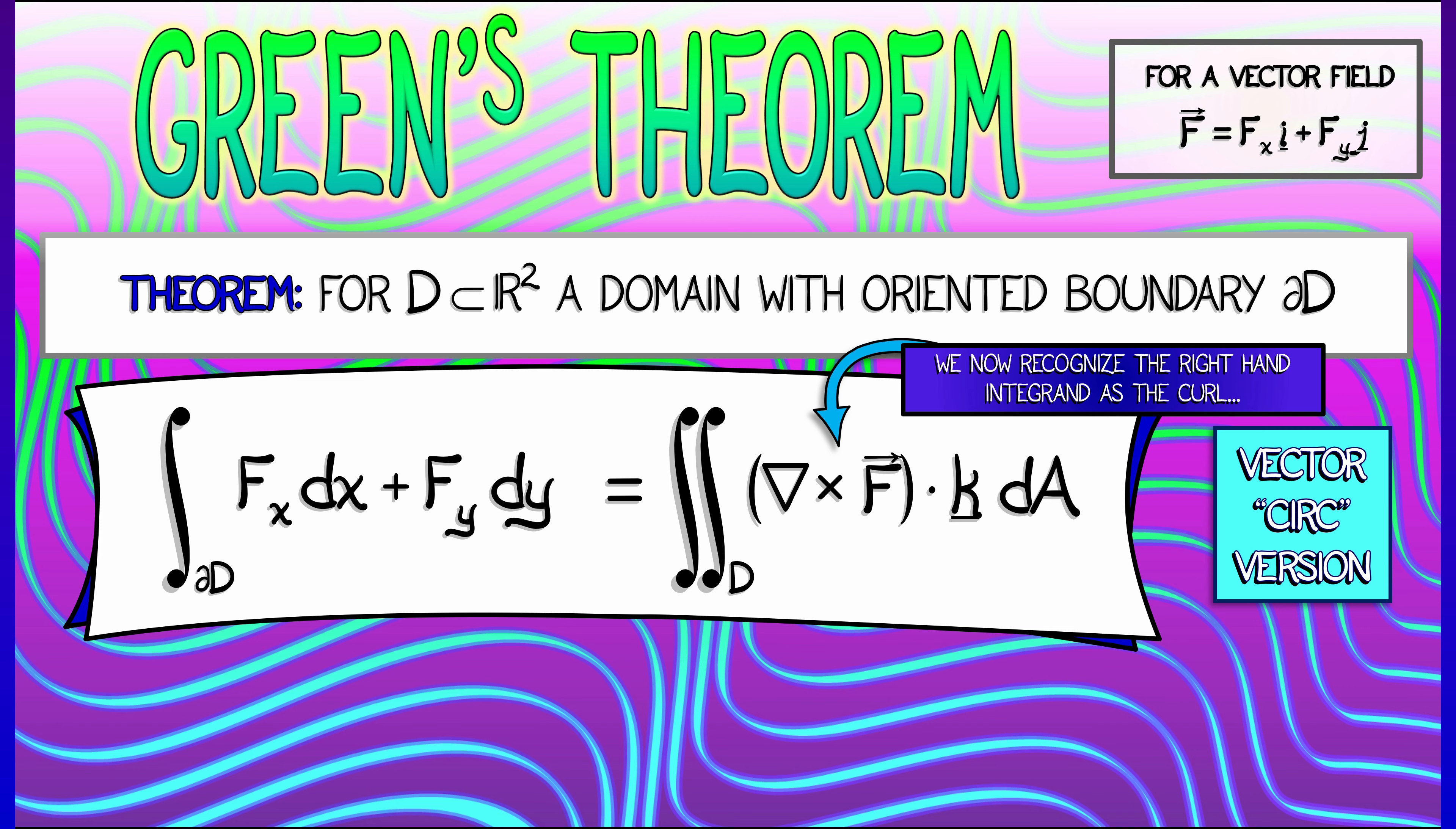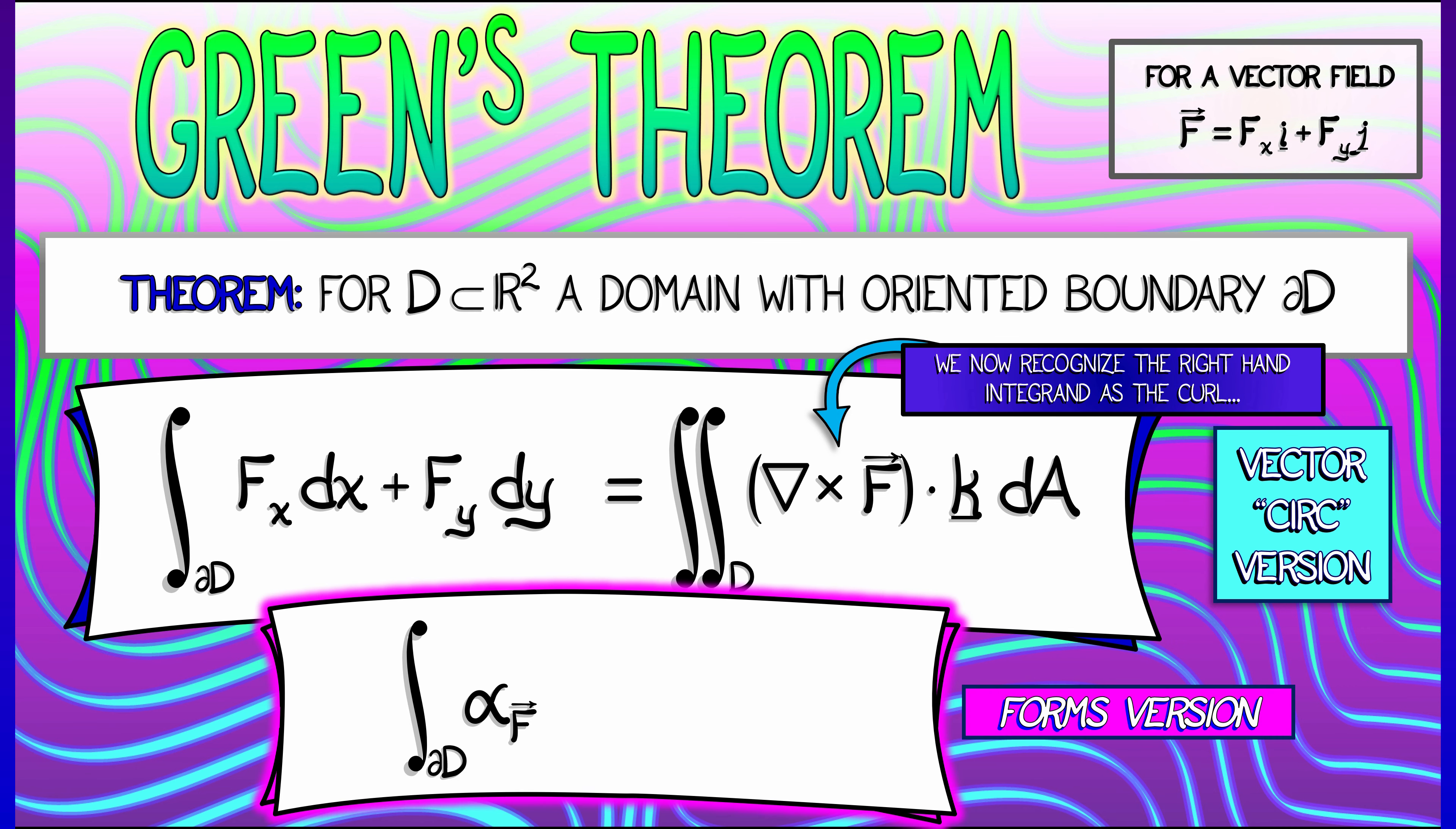If we convert this all to differential forms, it's a bit more elegant, a bit more compact. On the left-hand side, we have the integral of the work one form, alpha F, along the boundary of D. On the right-hand side, we have the integral of its derivative, D alpha F. That is a two-form that is given by the circulation density times DX wedge DY.